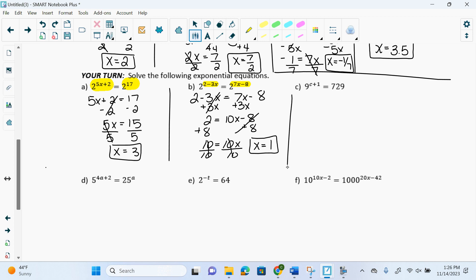Then I have 9 to the c plus 1 equals 729. So I get 9 to the c plus 1 equals 9 to the 3. So 729 is 9 to the 3. So then you have the same base. So then you can set your exponents equal. So I get c plus 1 equals 3. Subtract 1. c equals 2.